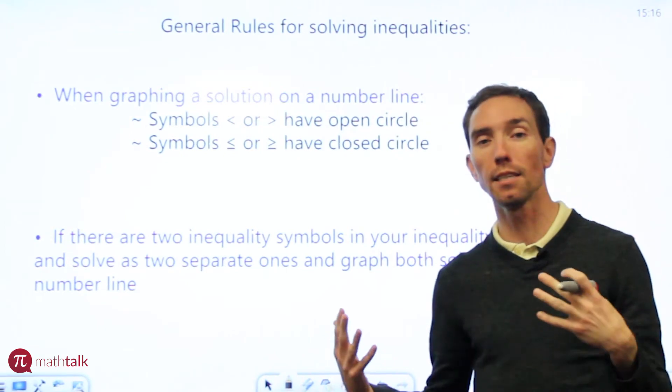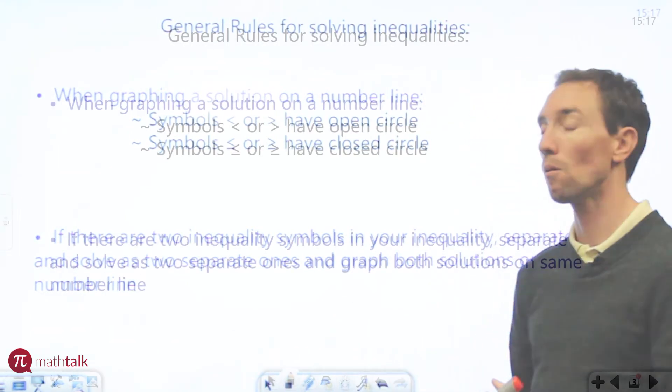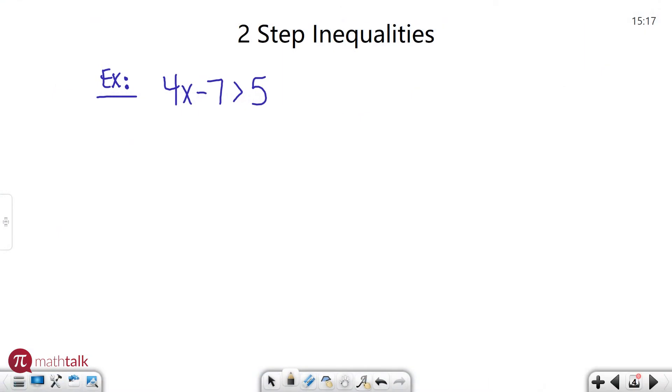But knowing these pieces of information let's go ahead and try a couple of examples on how to solve inequalities. So we're going to jump right into it. We have an example that says 4x minus 7 is greater than 5. So again it looks just like an equation except instead of an equal sign you have an inequality. So we're going to solve this just like normal. We're going to isolate our variable.